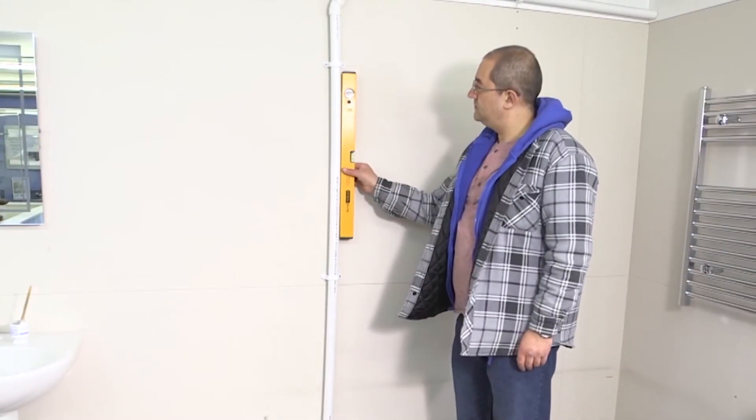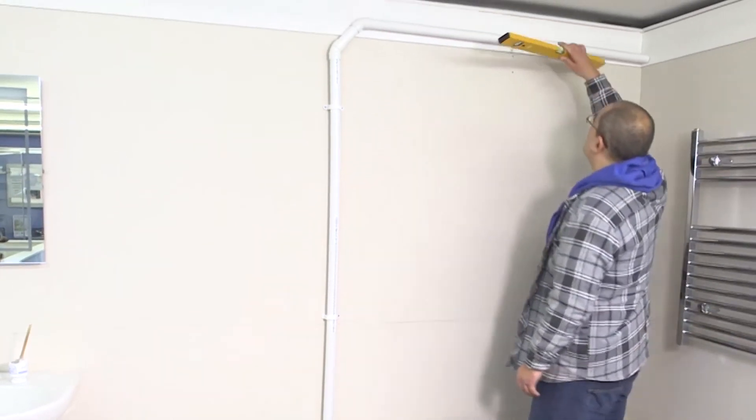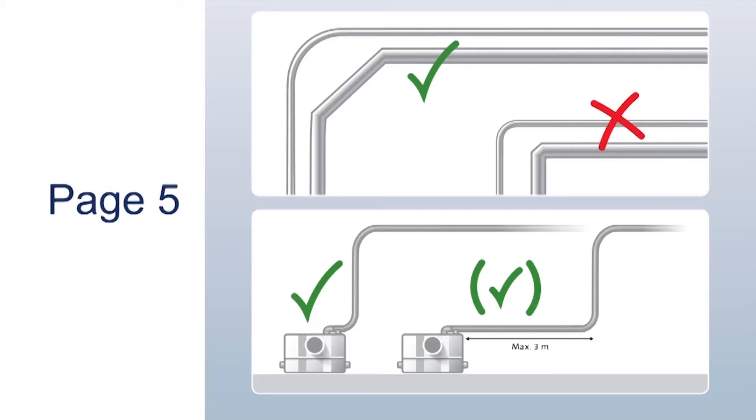Install the outlet pipes securely, ensuring that you use the correct bends and necessary fall, and connect to the soil stack. Please make sure you refer to your manual for recommendations for bends, distances and fall of the discharge pipe.